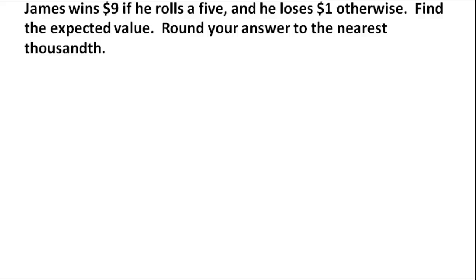We're working on expected value. This one says that James will win $9 if he rolls a 5, so he's got a die here. This is a six-sided die. If we don't specify that it's something else, then it's assumed that it's a six-sided die.